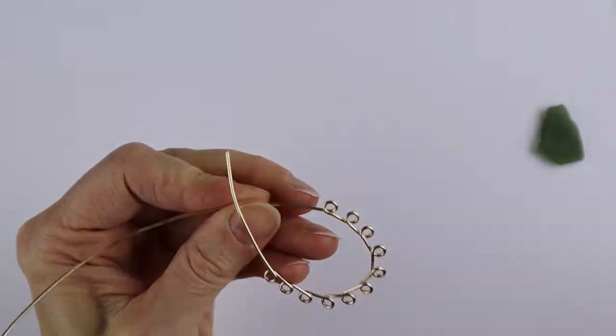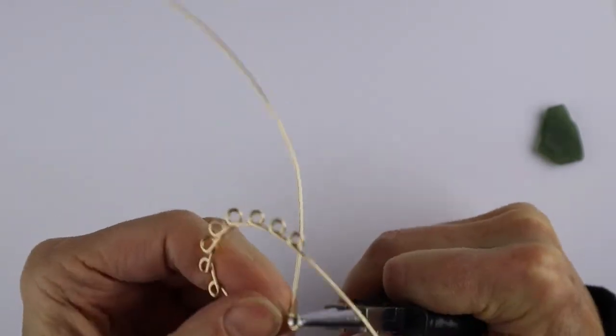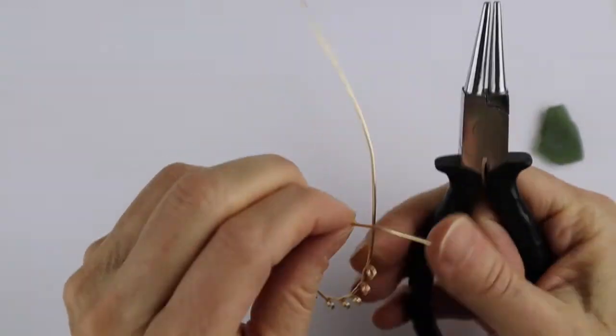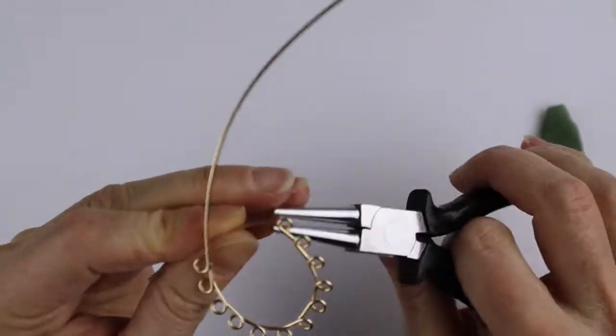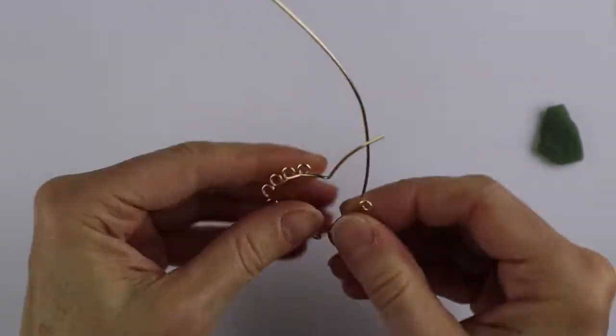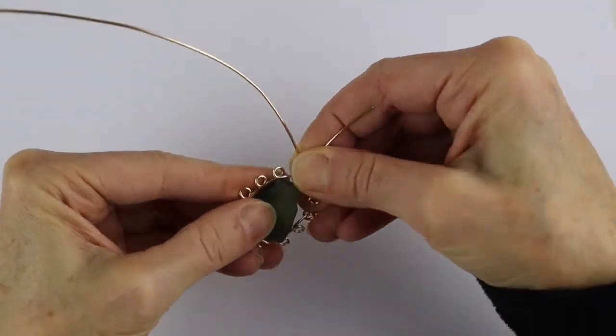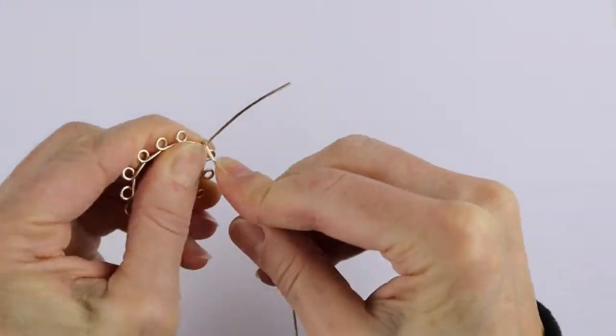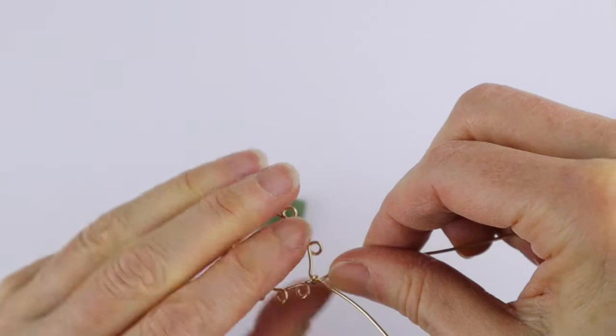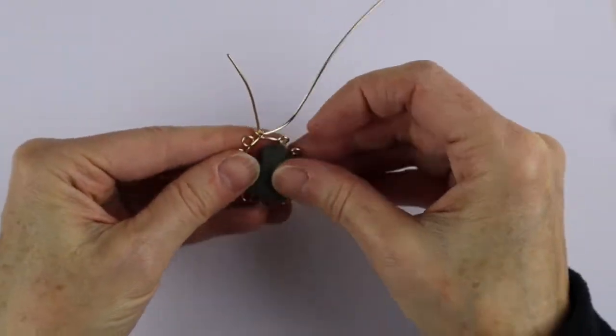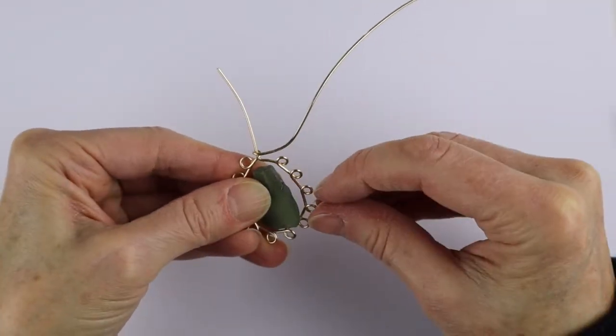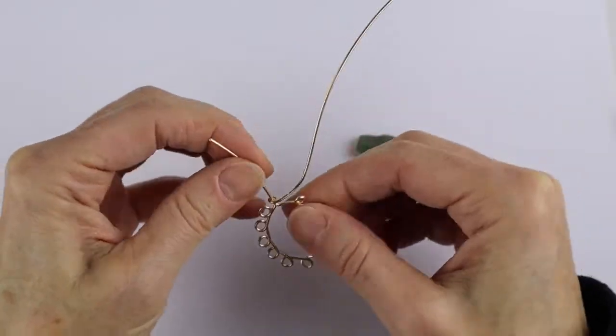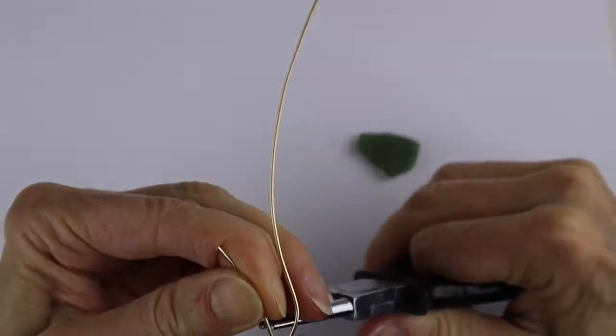You're going to just form it around your glass shape, and if you find you need another loop you can add another loop just to go all the way around the glass. Then what you're going to need is to bend one end up, and then the other end you're just going to wind around to make it the right size to fit the glass in there. You're going to wind it around and that's going to be your setting for the glass.